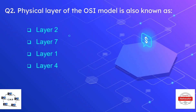Question number two is: the physical layer of the OSI model is also known as — the options are layer two, layer seven, layer one, and layer four. The correct answer is layer one. So layer one is also known as the physical layer.